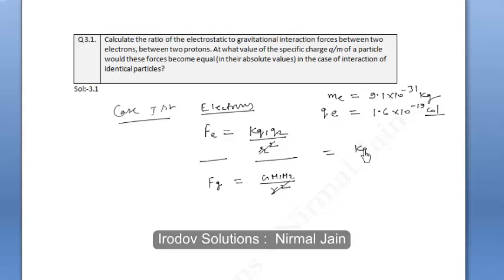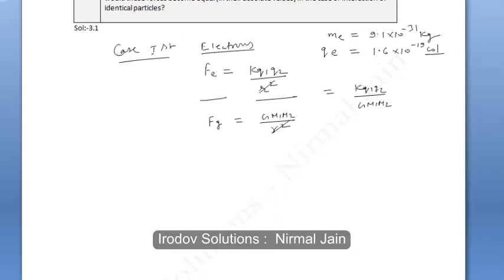What we have to do is find the ratio of K Q1 Q2 and G m1 m2 in case of electrons, as well as in case of protons.